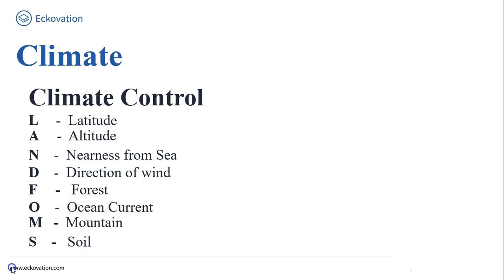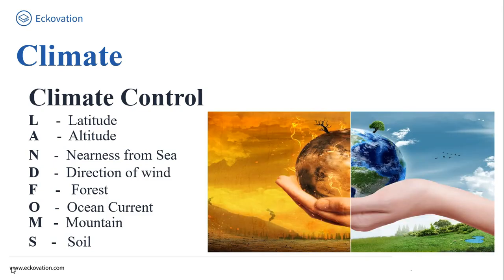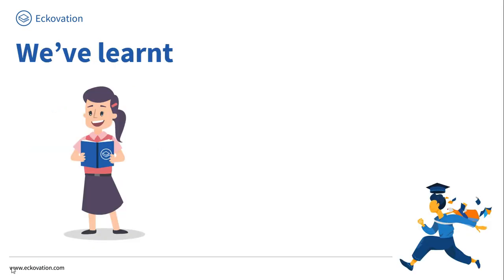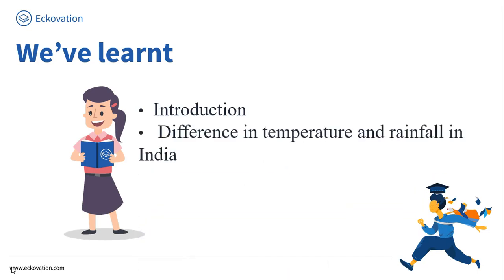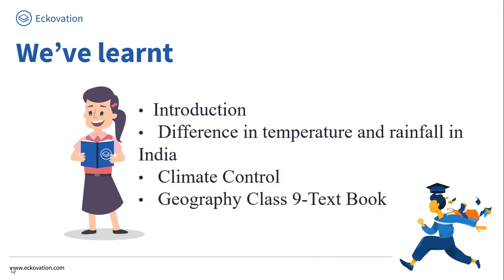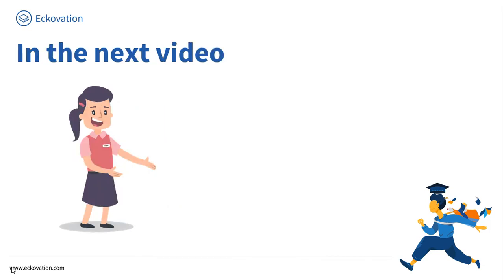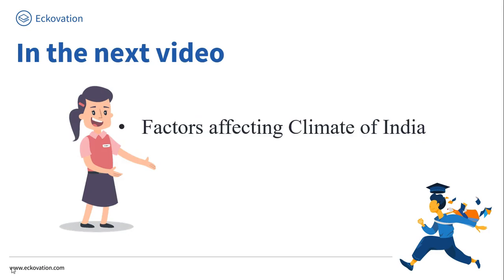Our next control is ocean current. When we talk about ocean currents along with onshore winds, they affect the climate of coastal areas. For example, if warm or cold currents are passing by a coastal area, then that area will experience warm or cold winds accordingly. So friends, in this chapter we have learnt the introduction to climate, the difference in temperature and rainfall in India, and climate control, with reference to the Geography Class 9 textbook. In the next video, we will learn about the factors affecting the climate of India. Till then, thank you.